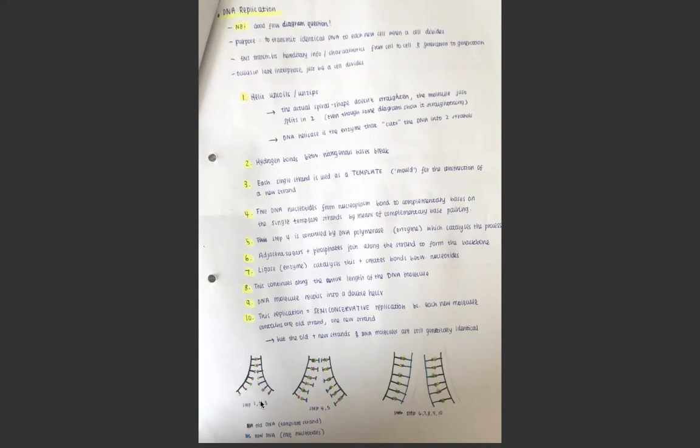For example, if this yellow one here was thymine, a free DNA nucleotide containing the base adenine would come from the nucleoplasm and join there and hydrogen bonds would form between them. This is controlled by the enzyme DNA polymerase, which catalyzes and speeds up the process. Once the hydrogen bonds have formed between the template strand and the new strand, the sugar phosphate backbone, so the adjacent sugars and phosphates in the new strand, join up and form the sugar phosphate backbone again. This is caused by the enzyme ligase, which creates the sugar phosphate backbone and the bonds between the nucleotides. This continues along the entire length of the DNA molecule.